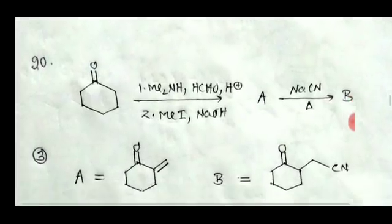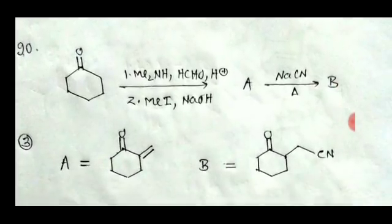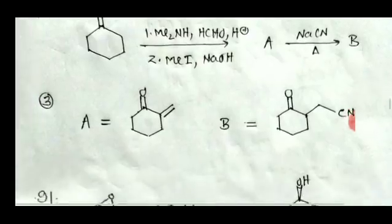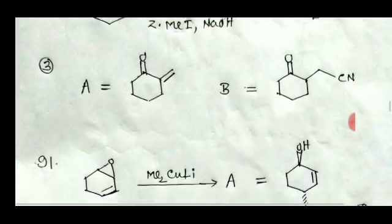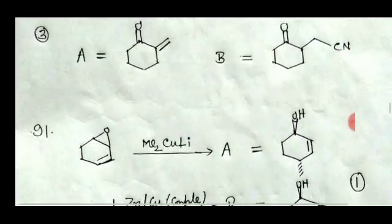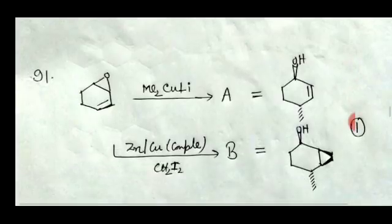For question number 90, in the first step it is the Mannich reaction — very simple. In the second step, sodium cyanide attacks in a Michael addition reaction, which gives product B. Option 3 is the correct answer.